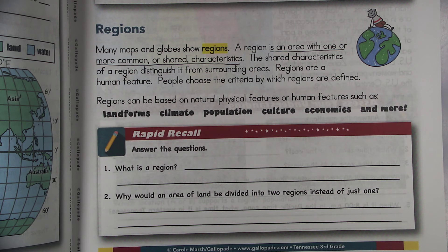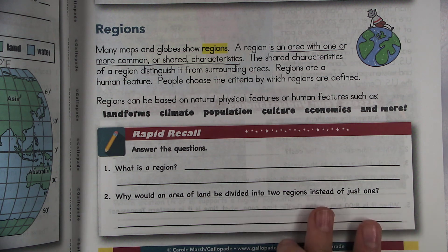Regions can be based on natural physical features or human features such as landforms, climate, population, culture, economics, and more. So you could say there are regions within Clarksville. You could say there are regions within Tennessee. You could say there are regions within the United States. Regions within the world. There are all sorts of different regions.